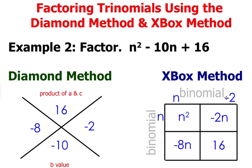That is negative 2. So negative 2 times n gives you the product negative 2n. So we have our first binomial, n minus 2.